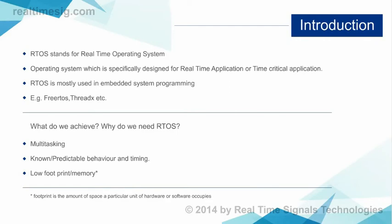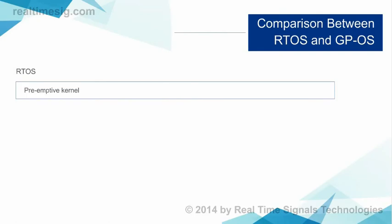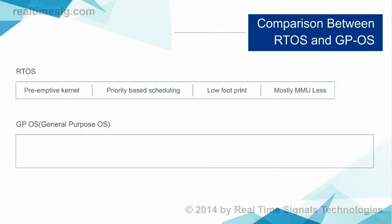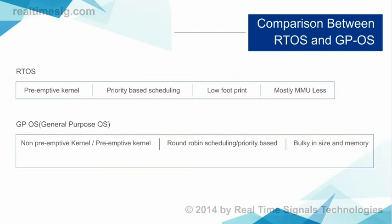Let's discuss more about the difference between RTOS and a general purpose operating system. RTOS has time-critical tasks, so it requires a preemptive kernel and priority-based scheduling — this is how you achieve time criticality. In a general purpose OS, you may have a non-preemptive kernel, and the scheduler can be a round-robin scheduler, with priority-based scheduling being optional.